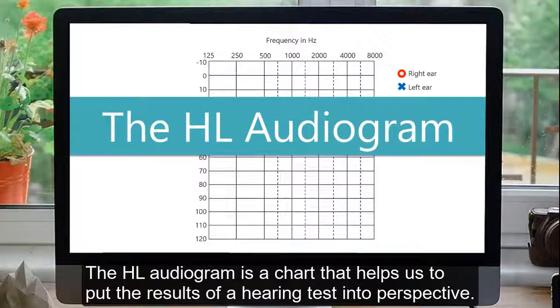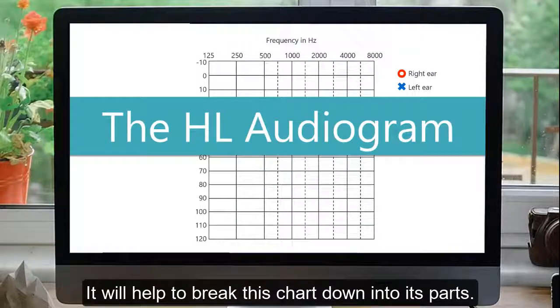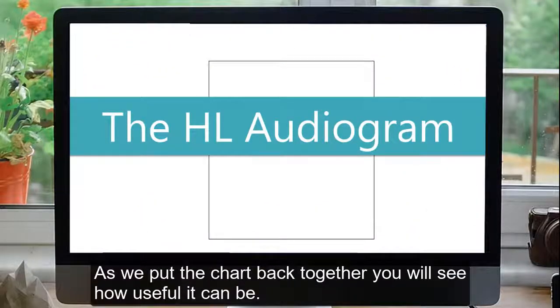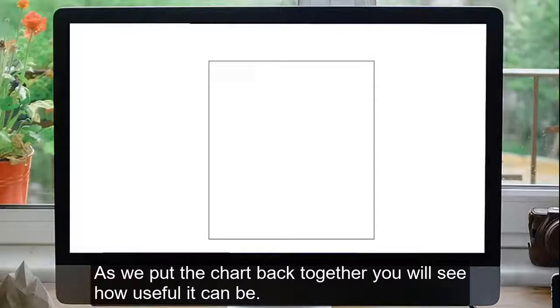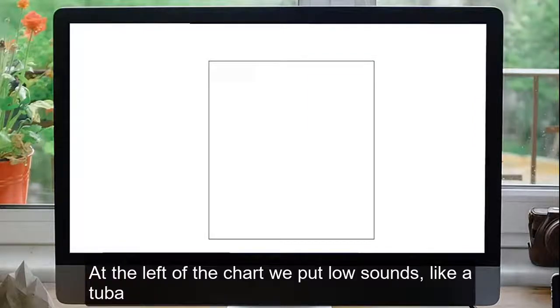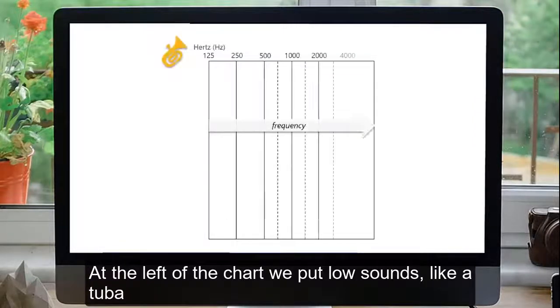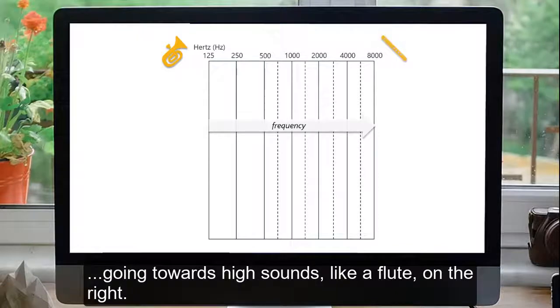The HL Audiogram is a chart that helps us to put the results of a hearing test into perspective. It will help to break this chart down into its parts. As we put the chart back together, you will see how useful it can be. At the left of the chart, we put low sounds like a tuba going towards high sounds like a flute on the right.